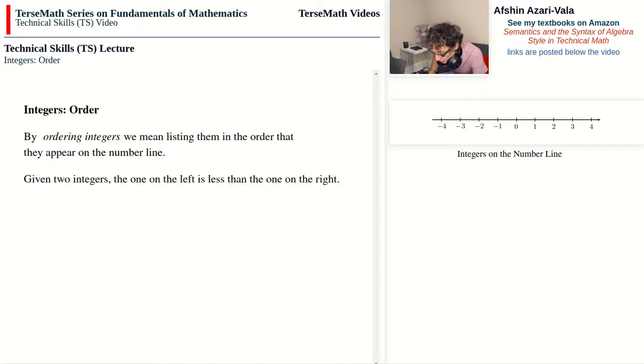Given two integers, the one on the left is less than the one on the right. As an example of that, 1 is less than 3. We can say that 0 is less than 2. Negative 1 is less than 1, and we can say that negative 4 is less than negative 2.